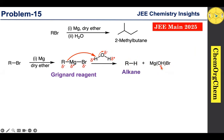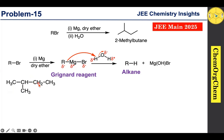The R group, coming with electrons, takes a hydrogen atom from water, kicking off the hydroxide ion, which produces the alkane as a product along with the magnesium by-product. Now we need to find all possible structural isomers of alkyl bromide that, after the Grignard reaction and reaction with water, will give us 2-methylbutane. Let's think backwards from this product.